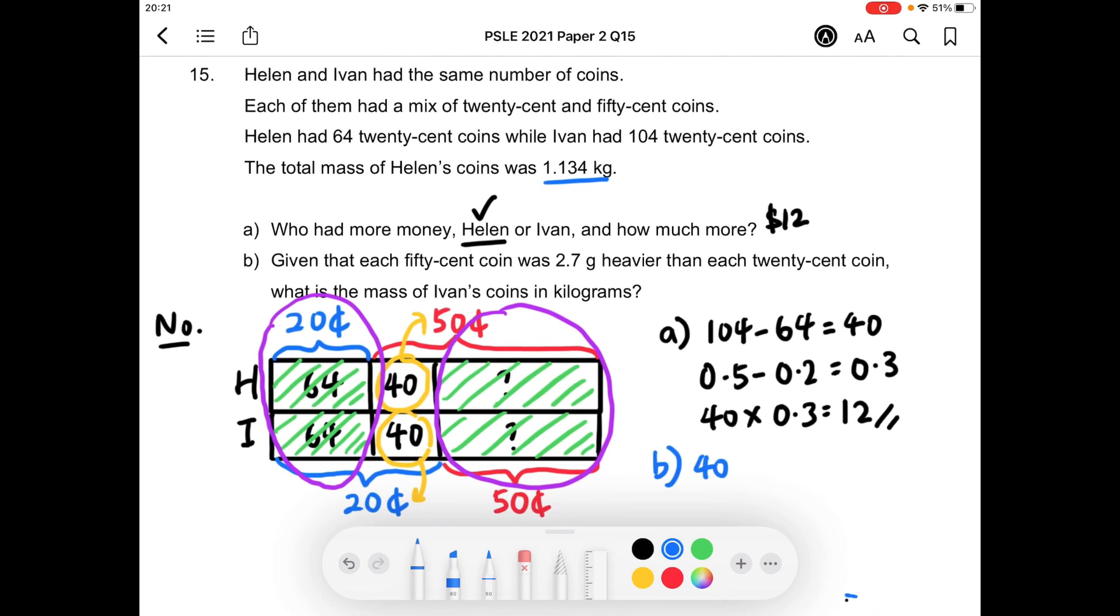we can take 40, multiply by 2.7 grams, to find out how much heavier the 40, 50 cent coins are, compared to the 40, 20 cent coins. So if you work it out, you will get 108 grams. So the mass of Ivan's 40, 20 cent coins, was 108 grams, or 0.108 kg,